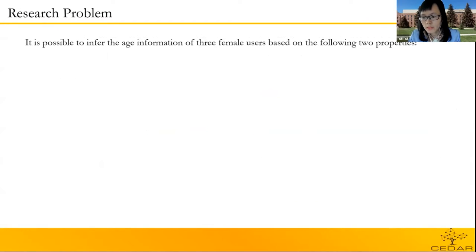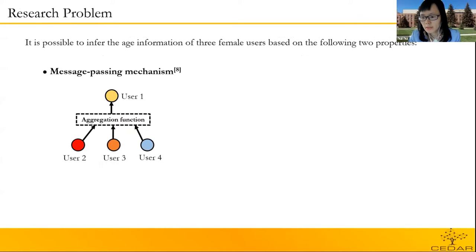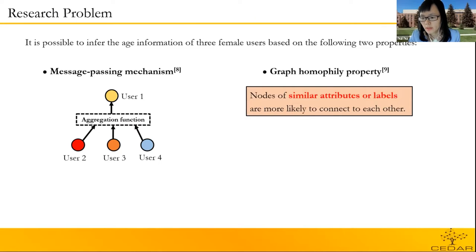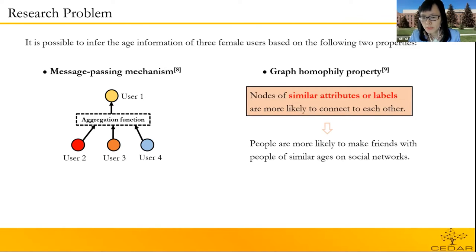Actually, it's possible based on the message passing mechanism and homophily property of GNNs. The message passing mechanism means a node will aggregate its neighbors' features when updating a new node representation. For example, in this figure, user 1 has three neighbors: user 2, user 3, and user 4. In the training process, user 1 will update its features by aggregating its neighbors' features. Therefore, the information of its neighbors will pass to user 1 during the aggregation process. Graph homophily property means nodes of similar attributes or labels are more likely to connect to each other. For example, people are more likely to make friends with people of similar ages in social networks. Therefore, based on these two properties of GNNs, it's possible for an attacker to infer a private user's sensitive attributes from her or his neighbors.